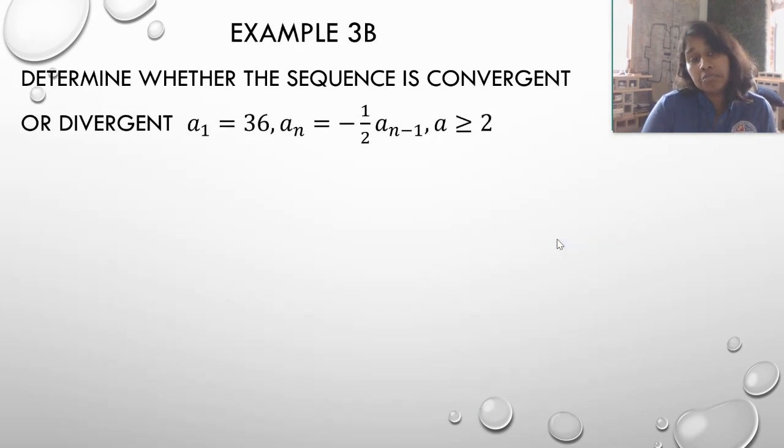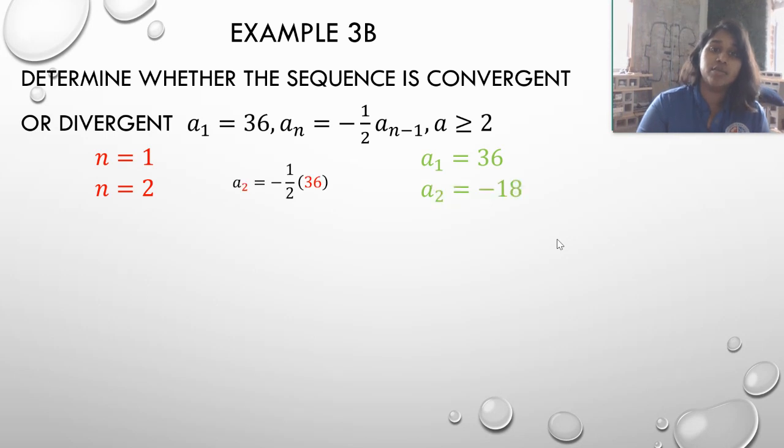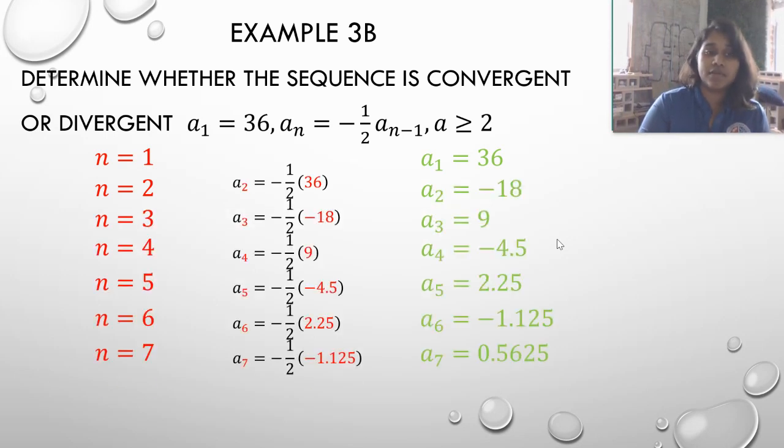So let's see the opposite. Let's determine whether the sequence is convergent or divergent. This time I'm given a recursively defined formula instead of the explicit formula, so I have to solve in order. I'm not allowed to solve out of order. But let's just start with the first one. That one's nice and easy. We already know the first term, they gave it to us. Second term I plug it in, get it, third, fourth, fifth.